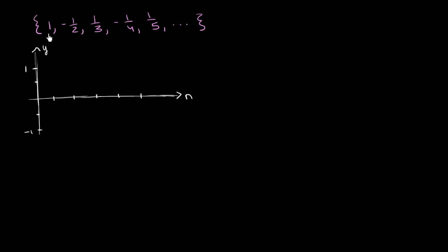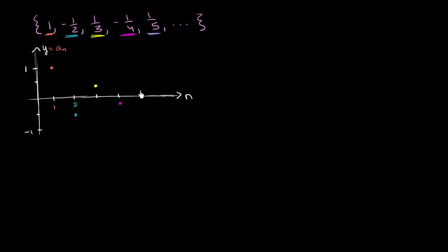When n is equal to 1, a sub n is equal to 1 — right over there. When n is equal to 2, a sub n is equal to negative 1/2. When n is equal to 3, a sub n is equal to 1/3, right about there. When n is equal to 4, a sub n is equal to negative 1/4, right about there. When n is equal to 5, a sub n is equal to positive 1/5. The points jump around, but they seem to be getting closer and closer to 0.